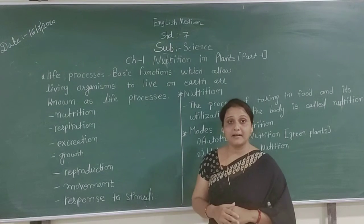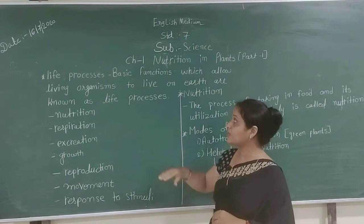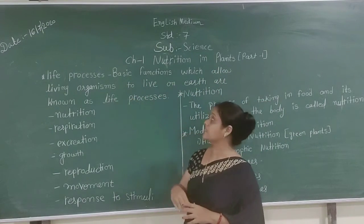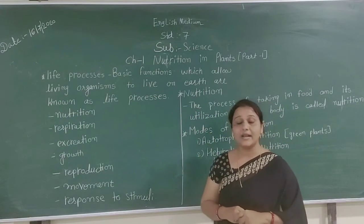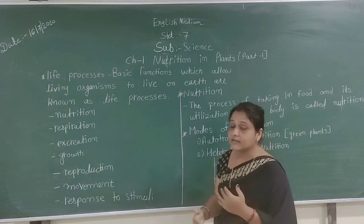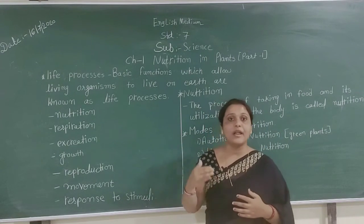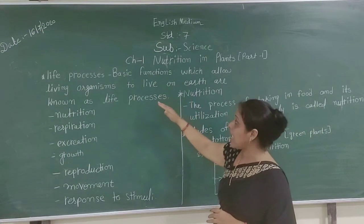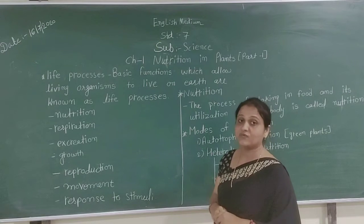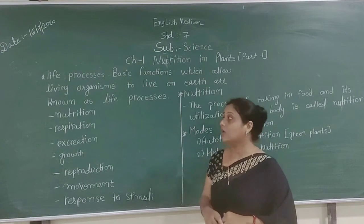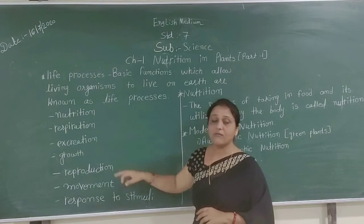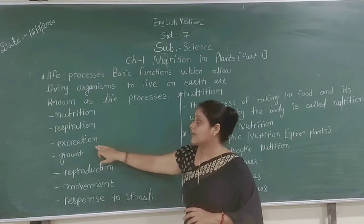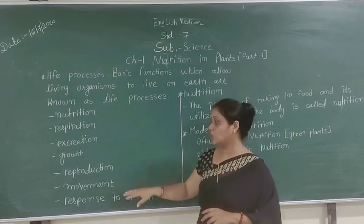The basic functions which allow living organisms to live on earth are known as life processes. These functions help animals, plants, and human beings to survive. The life processes include: nutrition, respiration, excretion, growth, reproduction, movement, and response to stimuli.